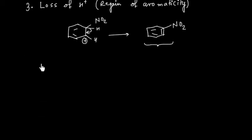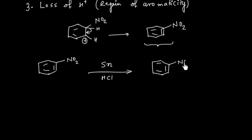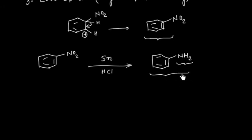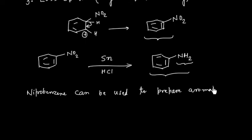Nitrobenzene can be easily reduced. If nitrobenzene is treated with Sn/HCl, it can be converted into NH2. So the nitro group can be converted into NH2. So this is a way to prepare amines. This is an aromatic amine. Nitrobenzene can be used to prepare aromatic amine. Nitrobenzene can be easily reduced. So this reaction is reduction.